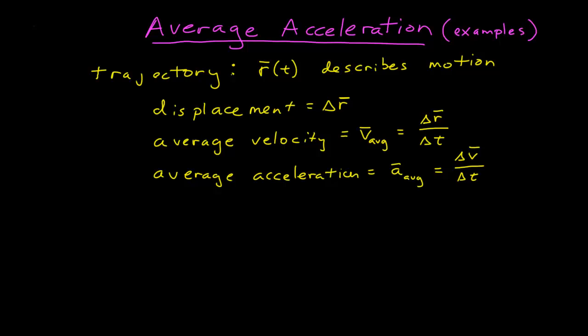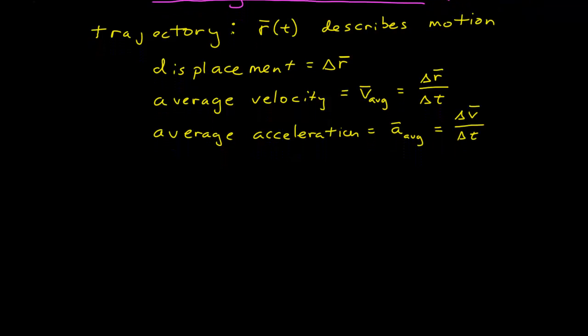In this module, we want to look at average acceleration again and look at some examples using motion diagrams. Previously we talked about the trajectory, the displacement, and average velocity, which tells us how the displacement is changing with time, and then the average acceleration, which is telling us how the velocity is changing in time.